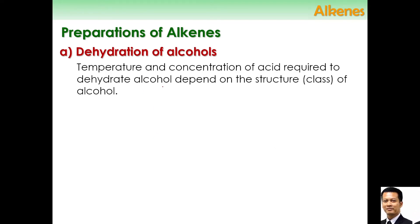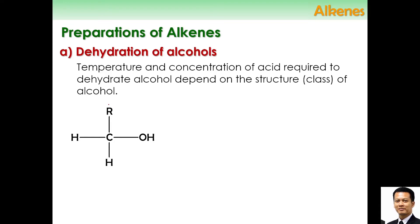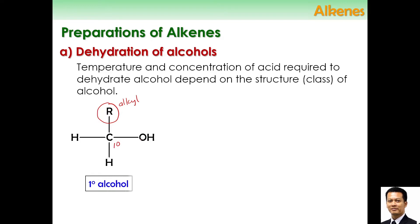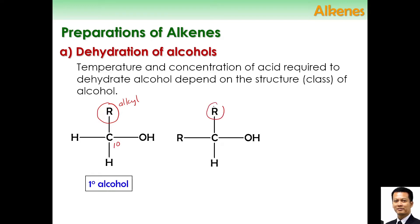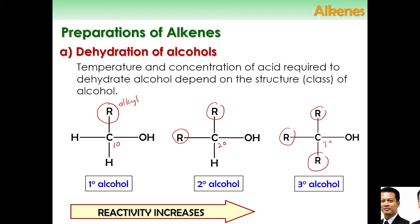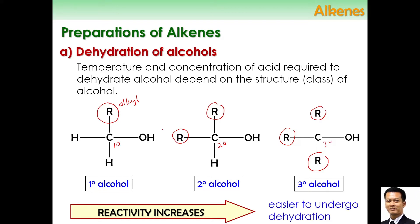You need to have your understanding about classes of alcohol. This is 1R — one alkyl chain attached to the carbon which is connected to the hydroxy group — so this one will be primary alcohol. 2R means two alkyl groups, so it means this one will be secondary. And 3R means that this is tertiary alcohol. Reactivity increases, meaning it is easier to undergo dehydration. Tertiary alcohol is the easiest to undergo dehydration.